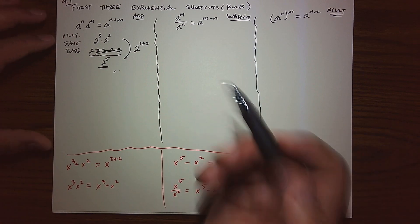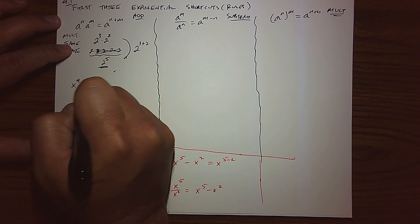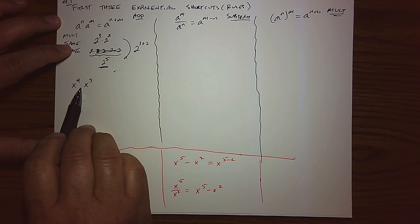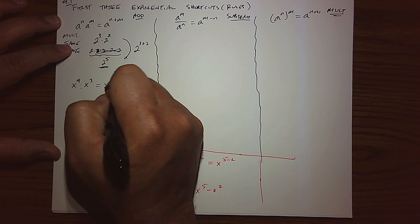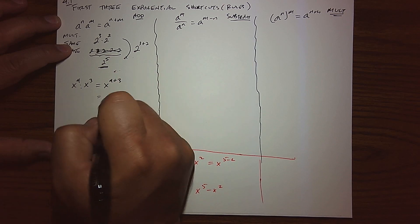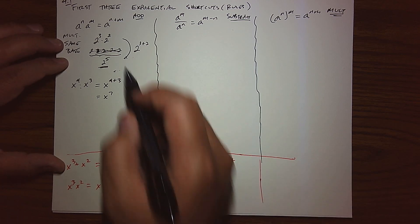Looking at this a couple of other ways — let's say we had x to the fourth and we're multiplying it to x to the third. So I'm multiplying two exponential expressions with the same base. The rule says to keep the base and add the exponents, which simplifies to x to the seventh. Same base, multiplication, keep the base, add the exponents.